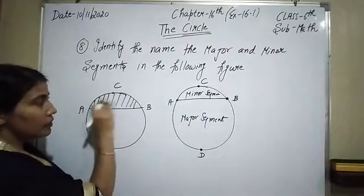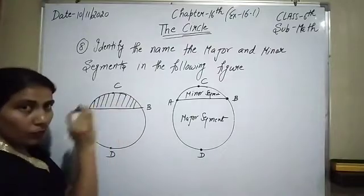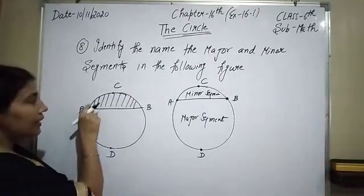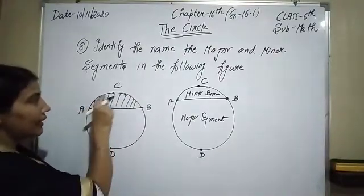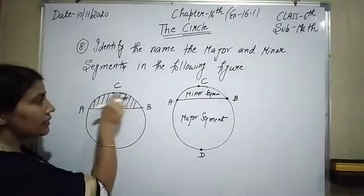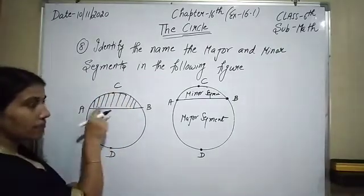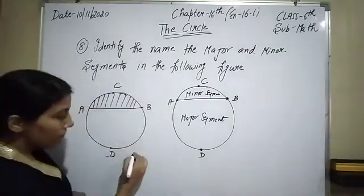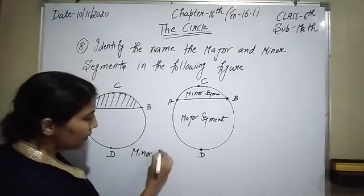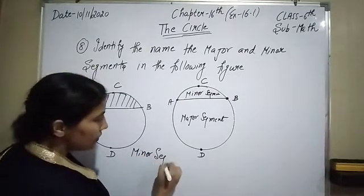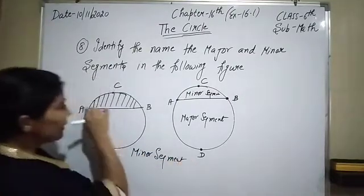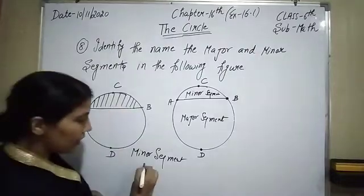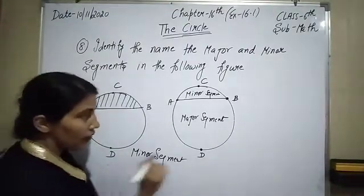That shaded portion is our minor segment. We can write it as ACB. So what is our minor segment? Minor segment: that is ACB.